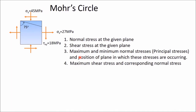In this video we will learn how to draw Mohr's circles for a general two-dimensional stress system. Consider an element subjected to a normal tensile stress sigma x of 27 MPa. The same magnitude 27 MPa acts in the opposite direction so that the element remains in equilibrium. Other stresses are sigma y, a compressive stress of 45 MPa, and one shear stress tau xy equal to 18 MPa.